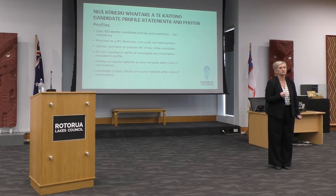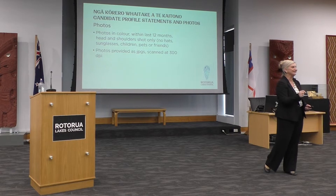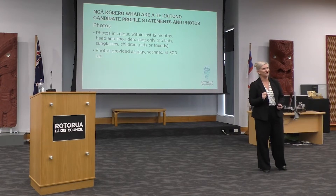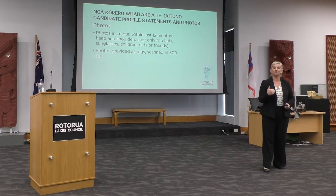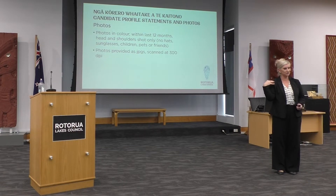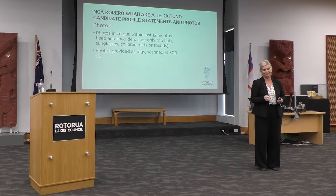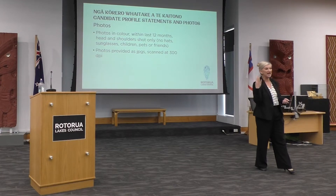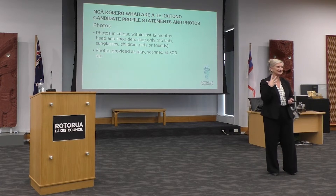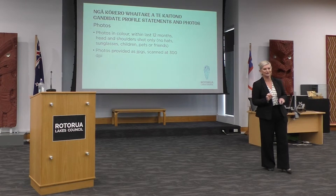Candidate contact details will also be on the council website after the close of nominations. A photo is required — it goes in the candidate handbook alongside your profile. Photos need to be in colour, of yourself within the last 12 months, and we're looking for a passport-style photo — head and shoulders only, just yourself. No friends, family, pets, hats or sunglasses — we want to see your full face. Photos must be provided as JPEGs scanned to 300 DPI so they come out sharp in the candidate handbook.